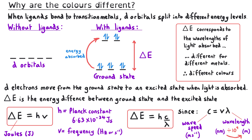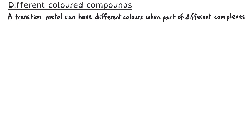If an atom or ion has a completely full D subshell, there is no available space for the electrons to be excited, and so it cannot absorb visible light and will appear colourless. Different transition metal compounds have different colours because the energy difference delta E varies between metals.